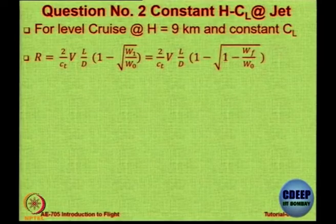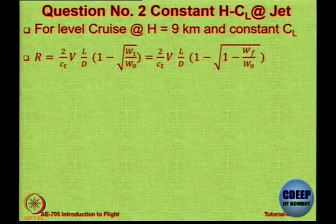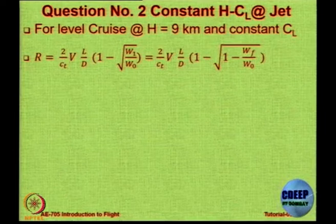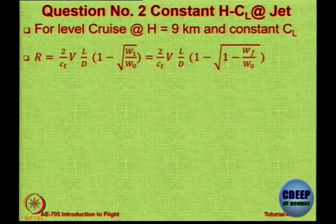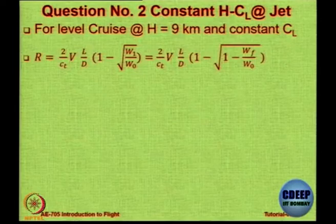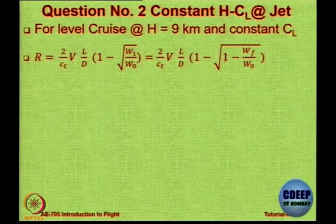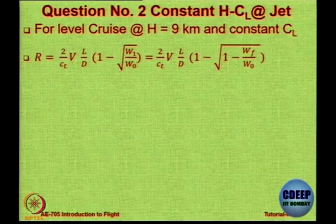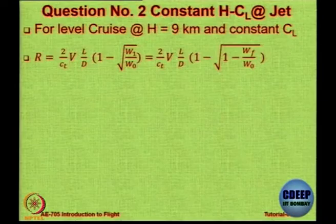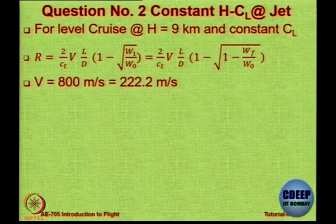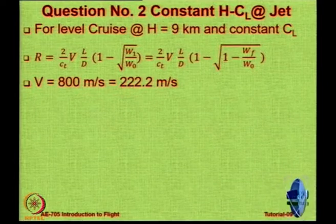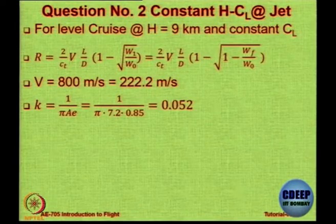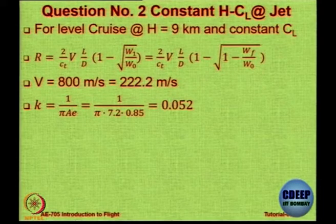The range will be: R = (2/SFC) × V × (L/D) × (1 − √(W1/W0)). Here W0 is the maximum takeoff weight which equals W1 + Wf, so W1 = W0 − Wf. It is given that the cruise fuel fraction Wf/W0 = 0.3, so you can rearrange the equation in terms of known information. V is given as 800 km/h — convert to m/s by dividing by 3.6. K, the induced drag factor, equals 1/(π × A × e); A and e are both given.